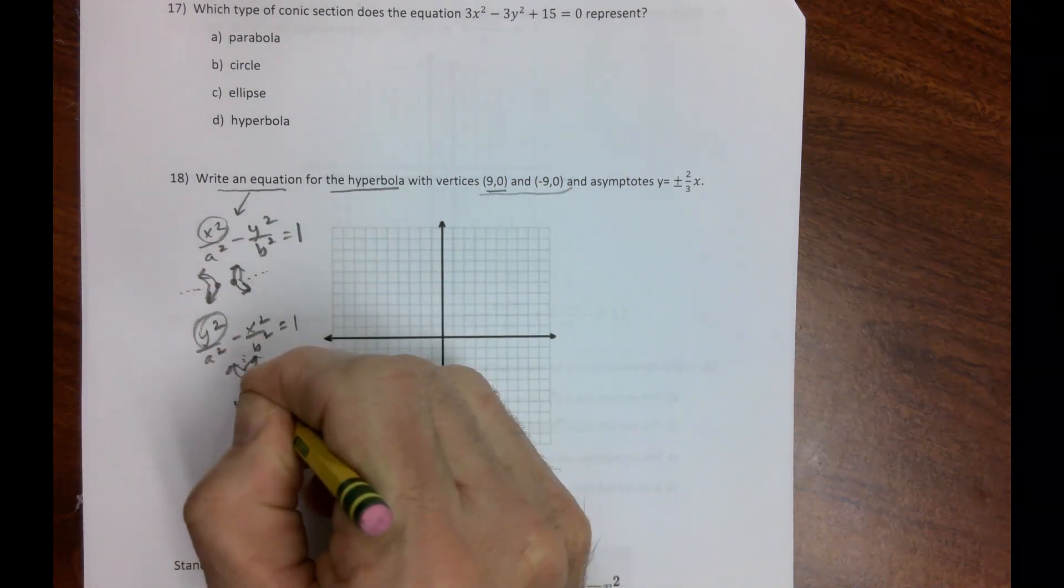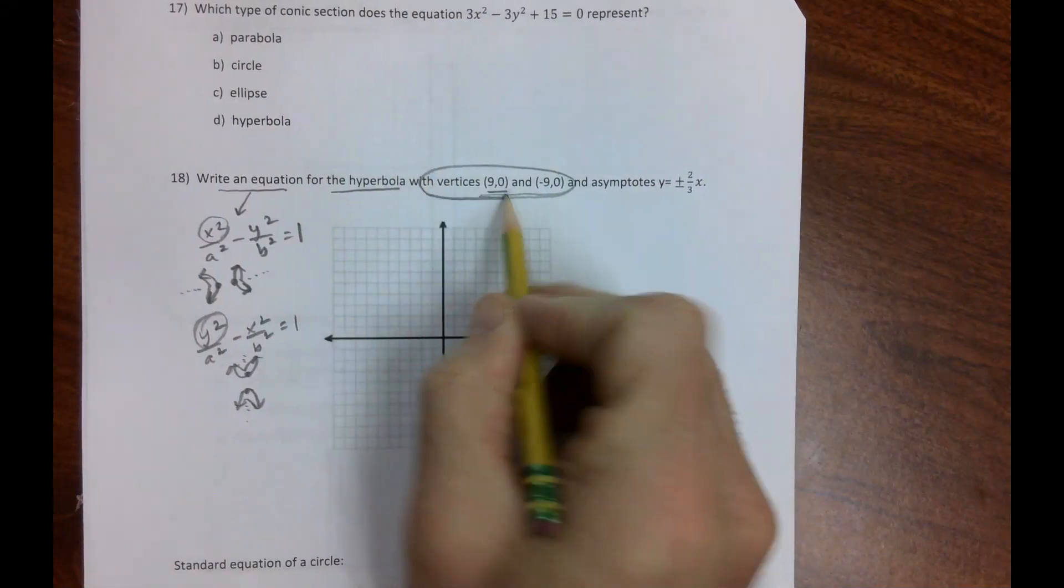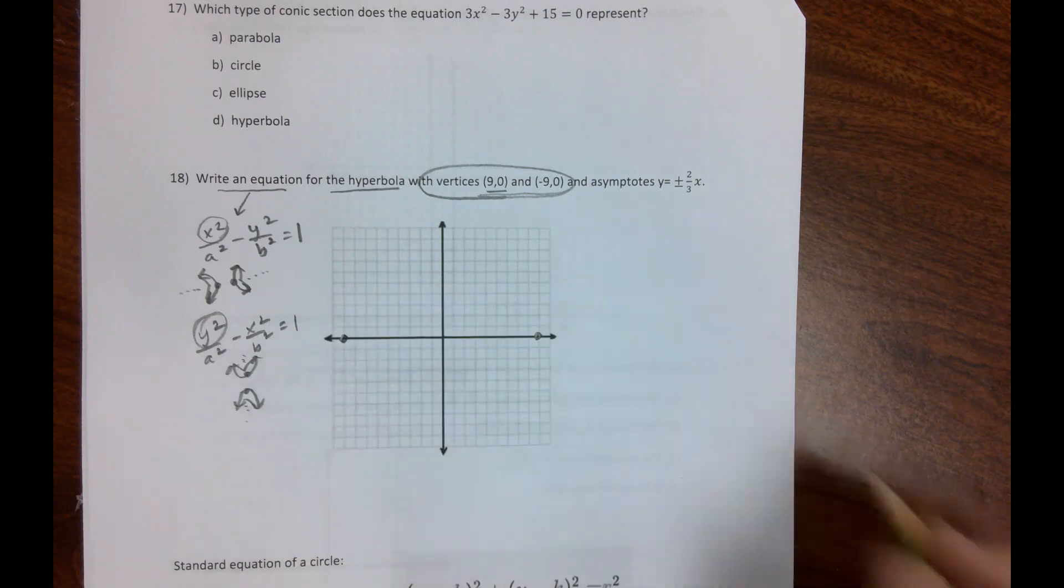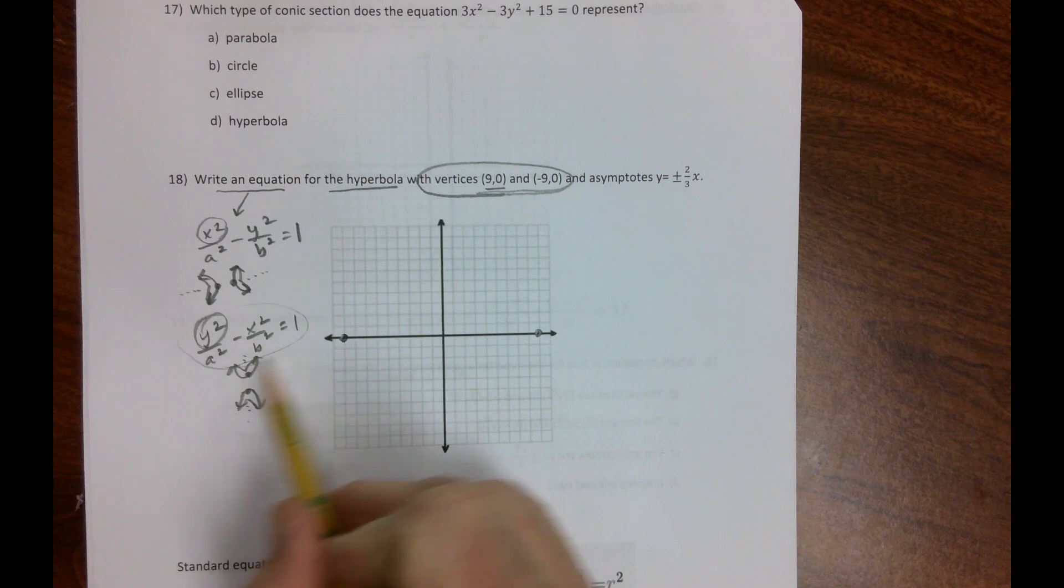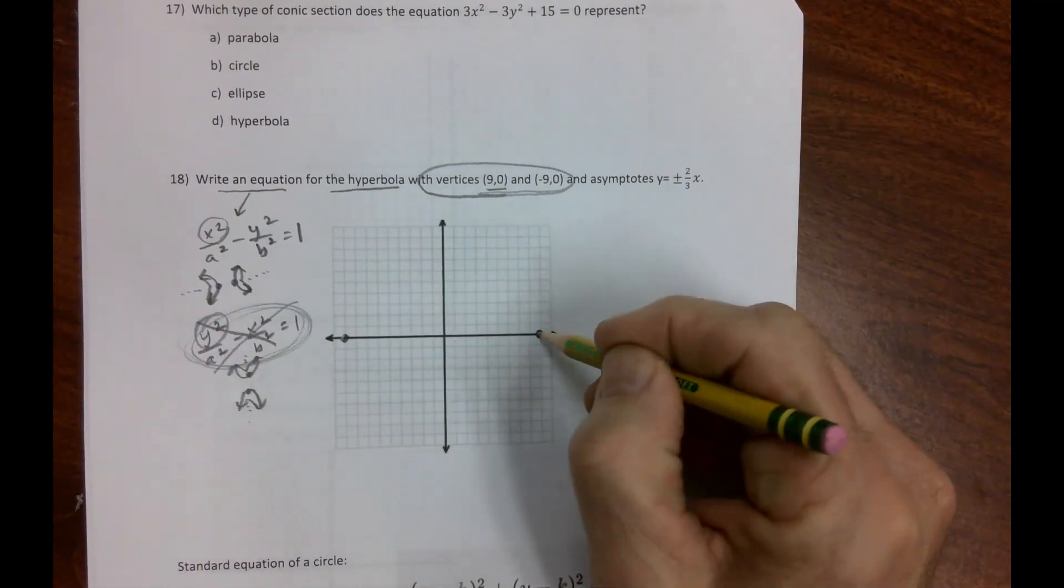This would be a vertex, this would be a vertex. Given vertices (9,0) and (-9,0), I initially made a mistake and picked the wrong form, but we should know right now that's not right.